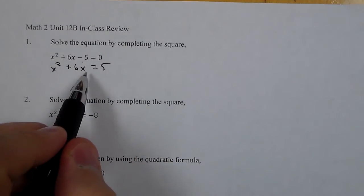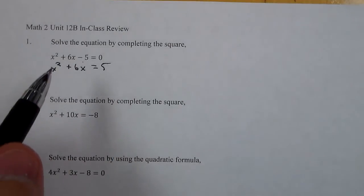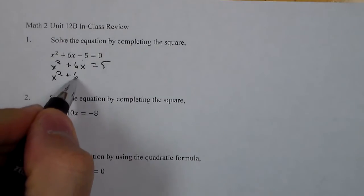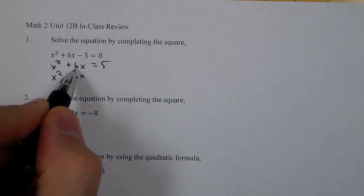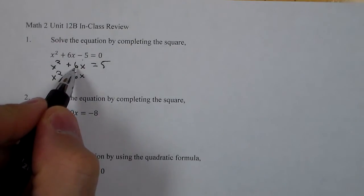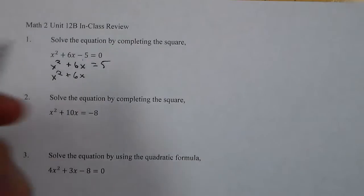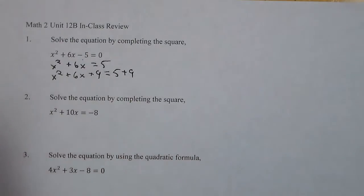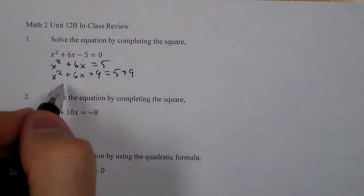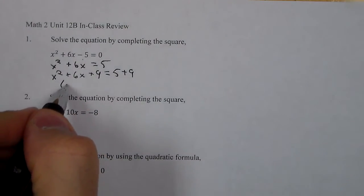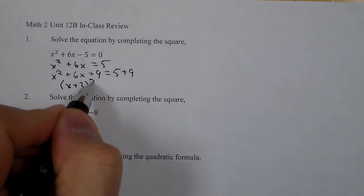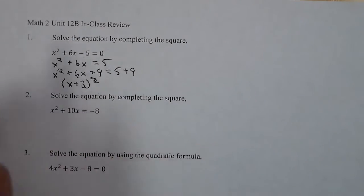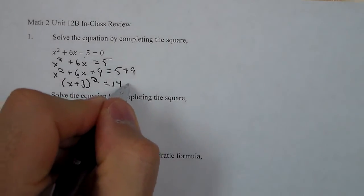We're now going to pick a value to add to both sides that allows us to complete the square on the left side. The value we're going to pick is half of the 6, squared. So 6 divided by 2 is 3, squared is 9. We add that to both sides to keep it balanced. Now the left side turns into x plus 3 squared, which will always be half of this value. So that's how we get half of 6 is 3, equals 14.